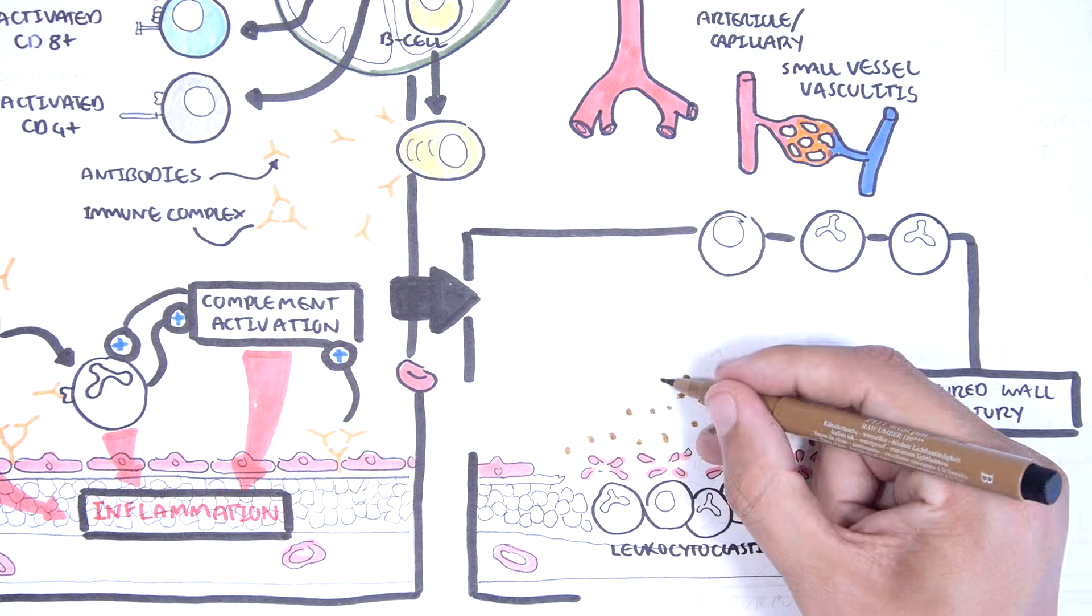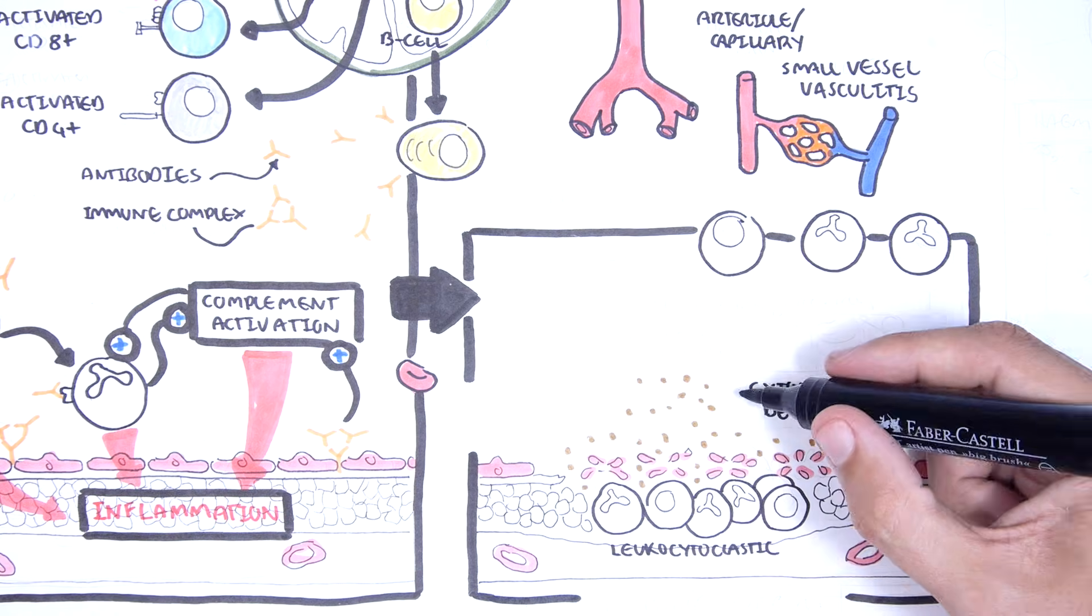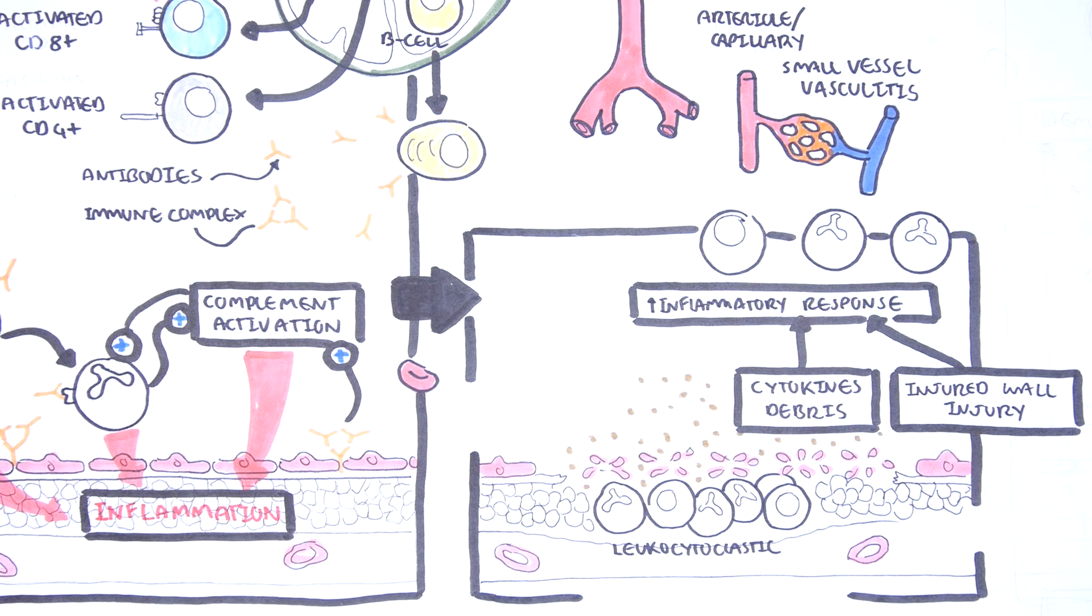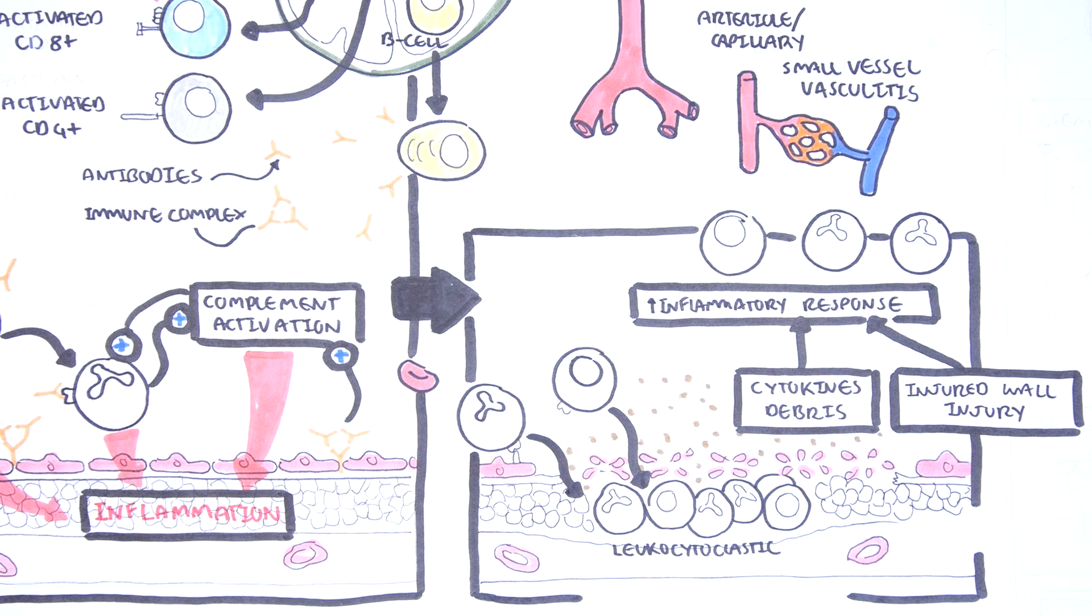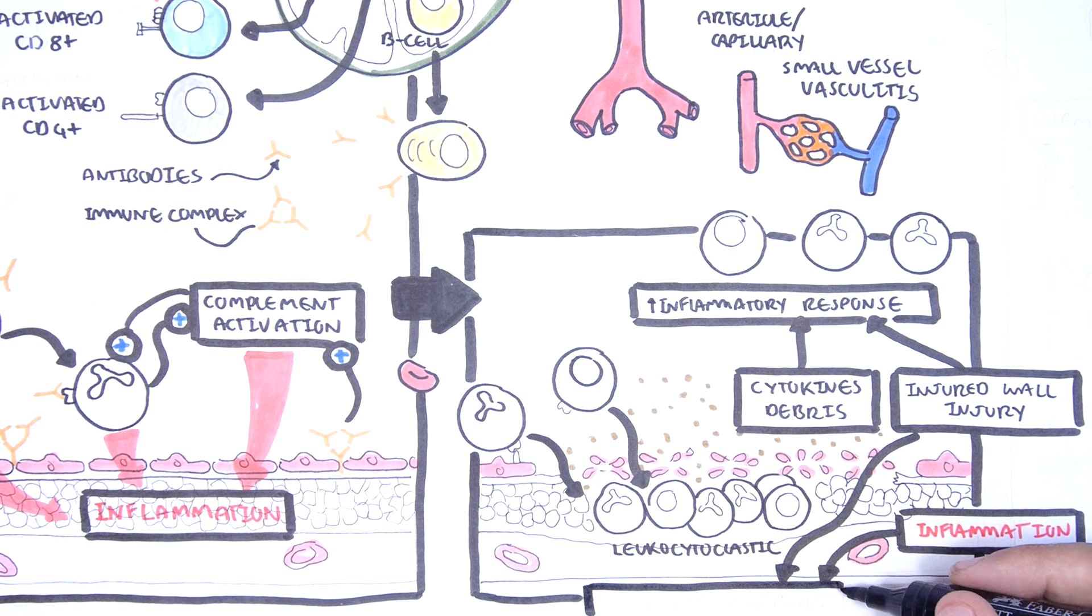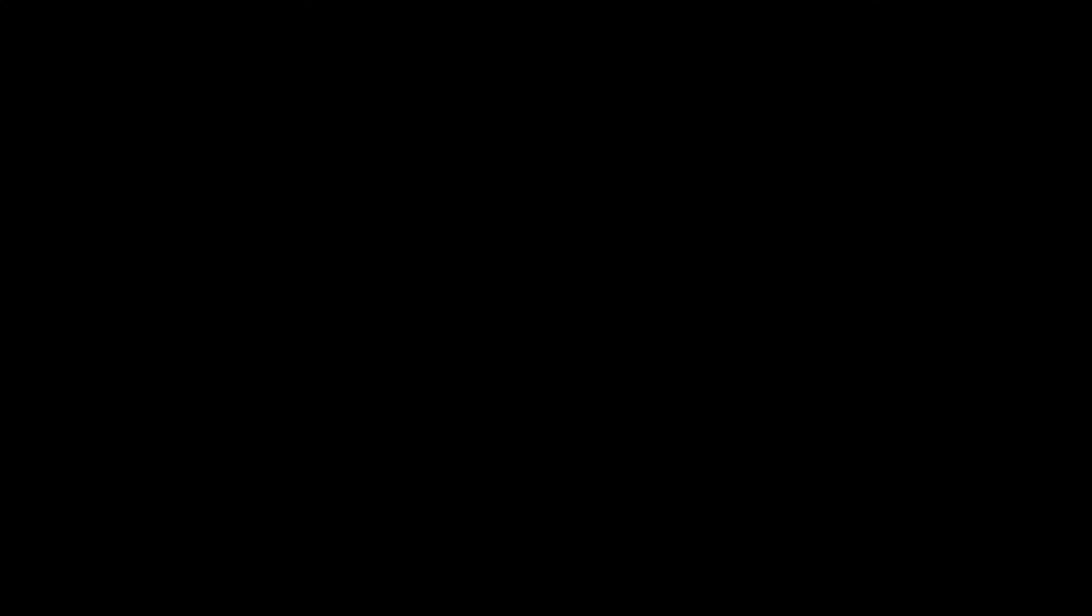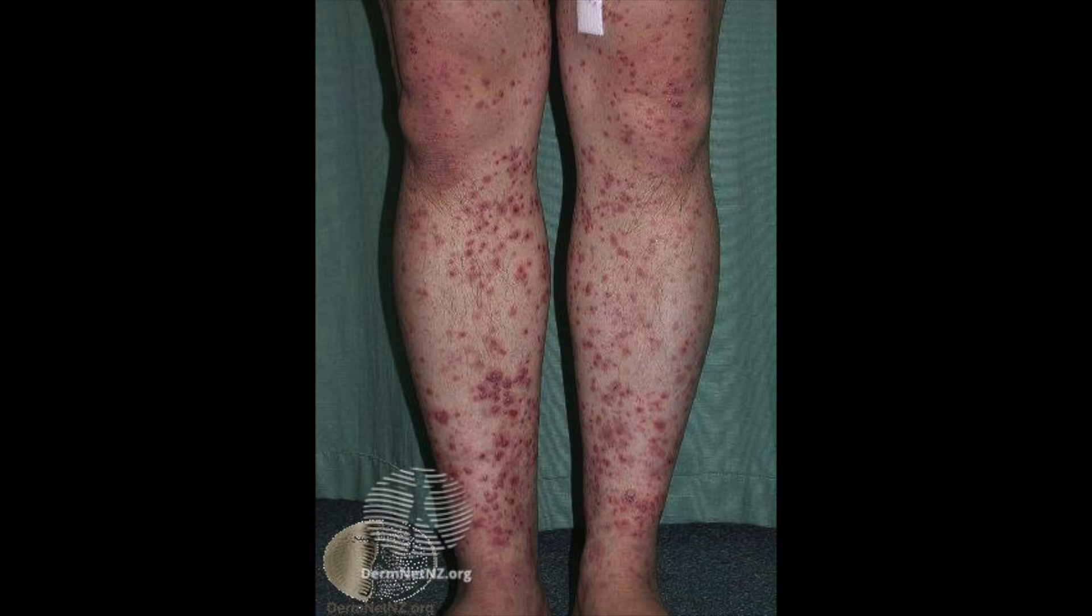You have to realize that the damaged blood vessel will release debris and cytokines and other factors which will further promote the inflammatory response, recruiting more immune cells. The injured blood vessel with the subsequent inflammation and also leukocytoclastic pattern will express itself as a palpable purpura which is a classic feature of small to medium vessel vasculitis. Here is an image of classic palpable purpura usually as a result of a leukocytoclastic pattern.